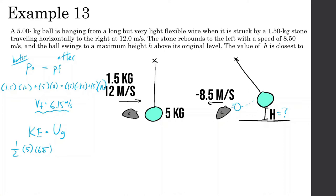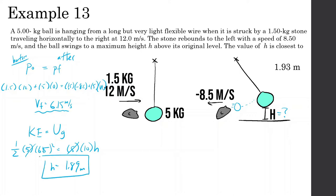So 1.5 squared — the mass of the ball is 5 after it's hit, and gravity is 10, and we can find the height. The 5's cancel out. 6.15 squared times 0.5, divide that by 10, and we get H = 1.89 meters.